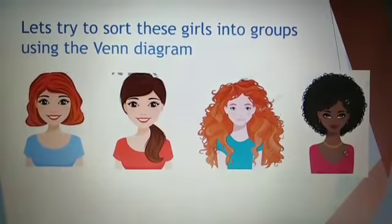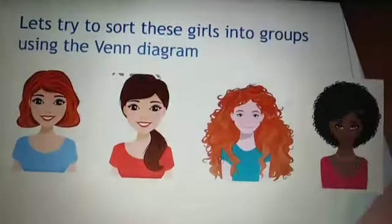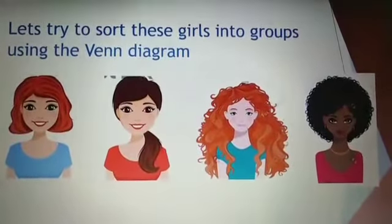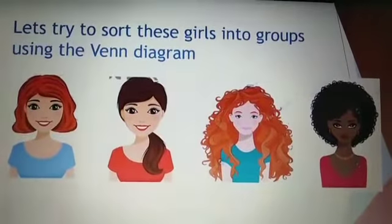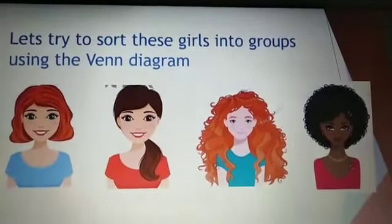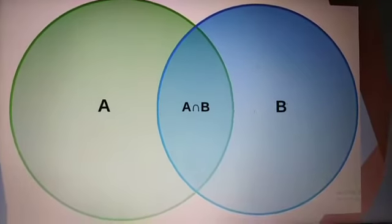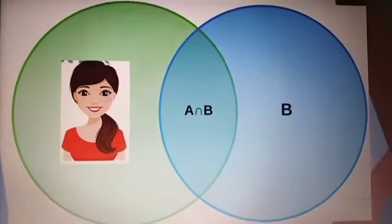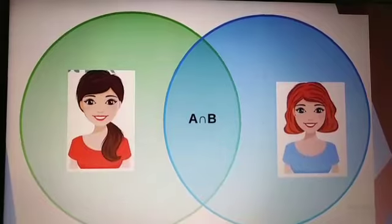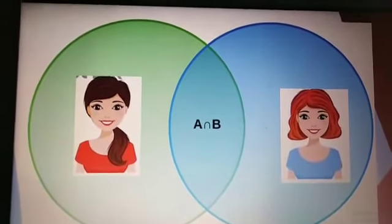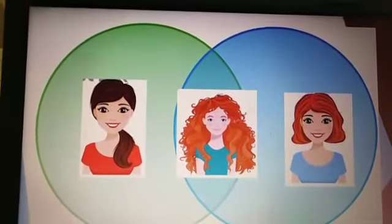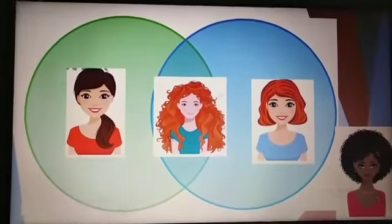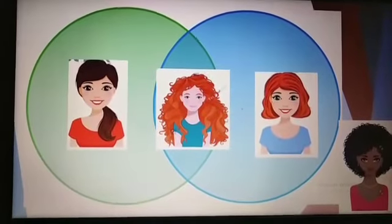Now let's try to sort these girls into groups using the Venn diagram. The first circle will be for long hair, the second circle will be for orange hair, and the overlap will be for both long and orange. Circle A is for the long hair girl, circle B is for the orange hair girl, and the overlap is for the girl with both long and orange hair. The last girl doesn't have long or orange hair, so she is outside both circles.